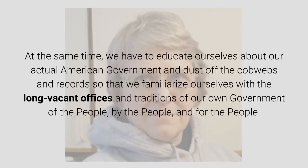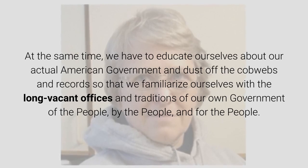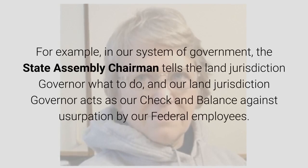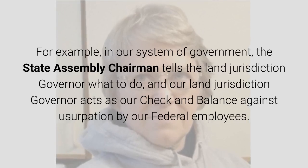We have to overcome both the talking horse response from our erstwhile and wayward federal and state-of-state employees, and the confusion of Americans who have been misled to think of and call themselves US citizens all their lives. At the same time, we have to educate ourselves about our actual American government and dust off the cobwebs and records so that we familiarize ourselves with the long vacant offices and traditions of our own government of the people, by the people, and for the people. For example, in our system of government, the state assembly chairman tells the land jurisdiction governor what to do, and our land jurisdiction governor acts as our check and balance against usurpation by our federal employees.